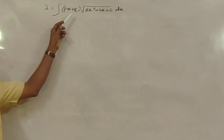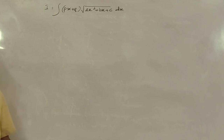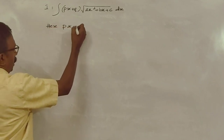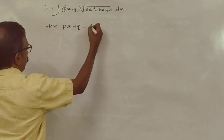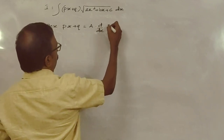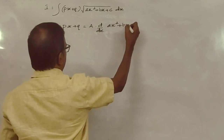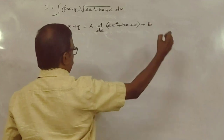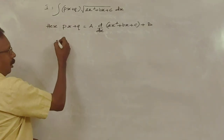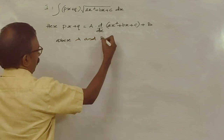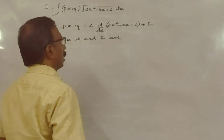In the integral of (px + q) into root of (ax² + bx + c), here px + q can be represented as: px + q is equal to A into d/dx of (ax² + bx + c) plus B, where A and B are any two constants.